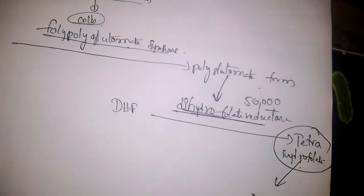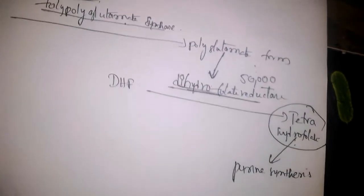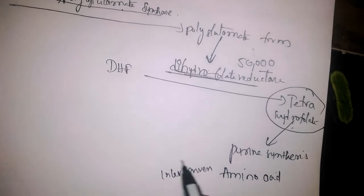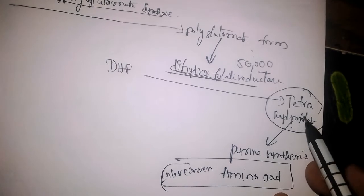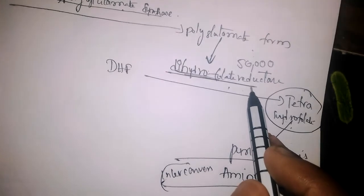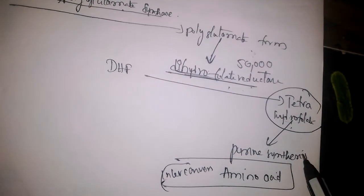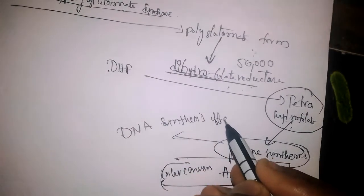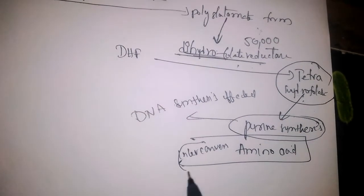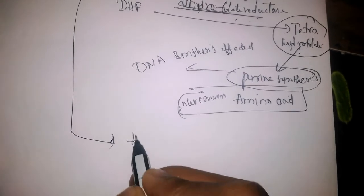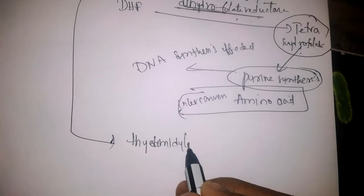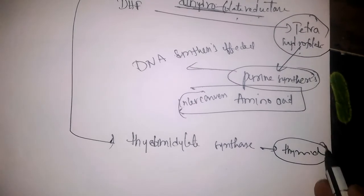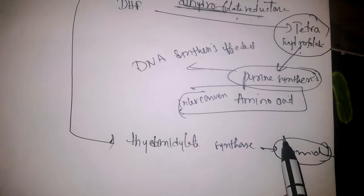Tetrahydrofolate is required for purine synthesis as well as interconversion of amino acids. Since tetrahydrofolate is not synthesized due to inhibition of dihydrofolate reductase by methotrexate, purine synthesis is impaired and DNA synthesis is affected. Additionally, the polyglutamate form also inhibits thymidylate synthase, the enzyme required for thymidine synthesis, which is also required for DNA synthesis.